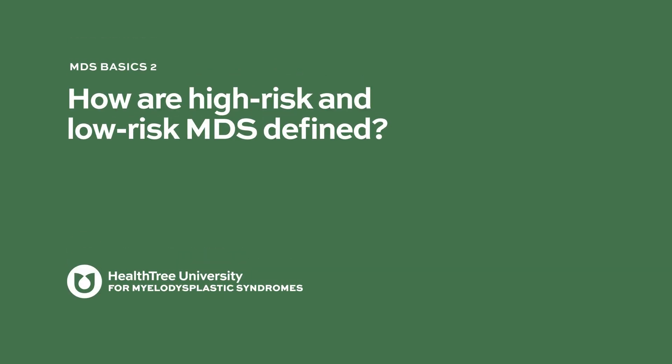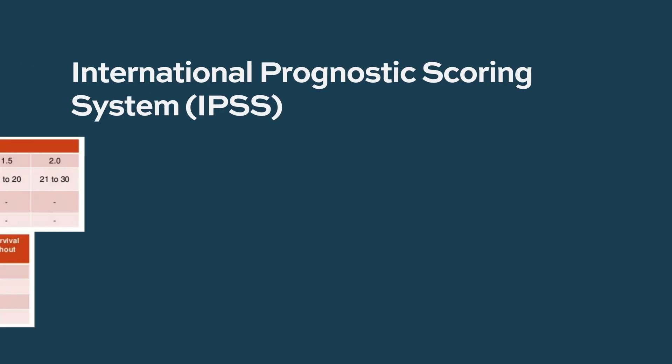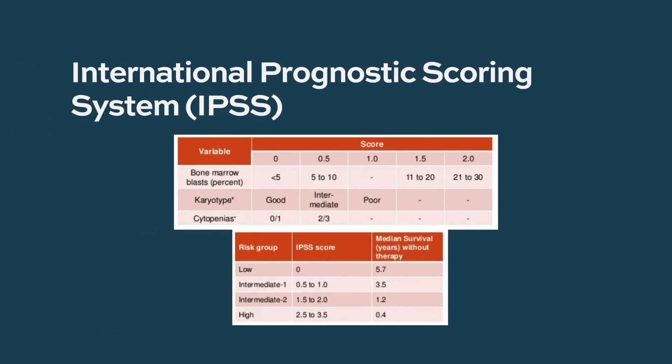How are high-risk and low-risk MDS defined? The way we do it traditionally is with a scoring system called the IPSS — the International Prognostic Scoring System for MDS. That's based upon a number of factors.